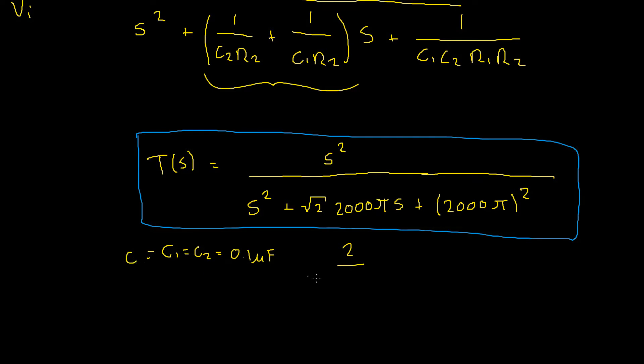nothing too wild. It allows us to simplify this S term down into 2 over, let's call our new capacitor value C, C times R2. Now we can set this equal to the coefficient on our S term and solve for our resistor R2 as we have a value for the capacitor.